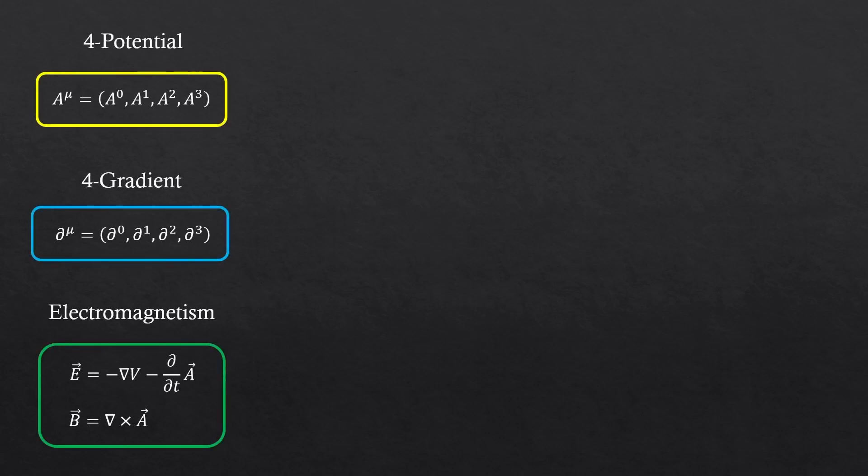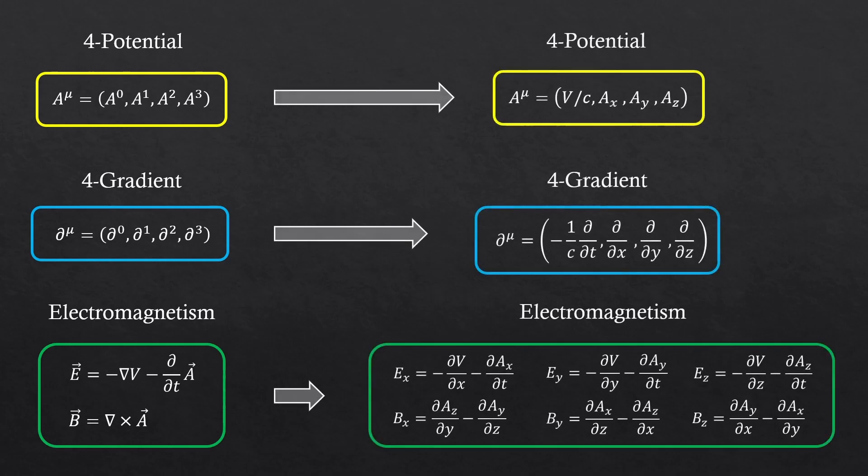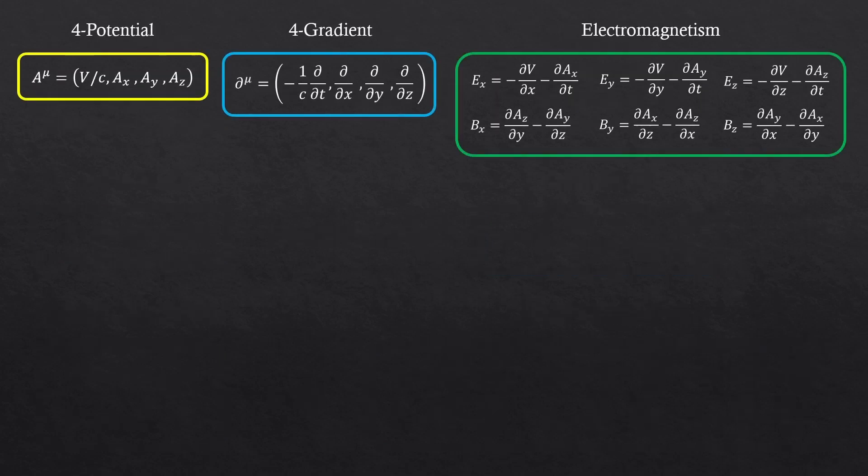Alright, so before, in the beginning, I brought these three. And then we investigated them for better understanding. Now we are ready to generate that field tensor. So now, we are going to try to rewrite those six expressions in the green box. In terms of the four potential and the four gradient.